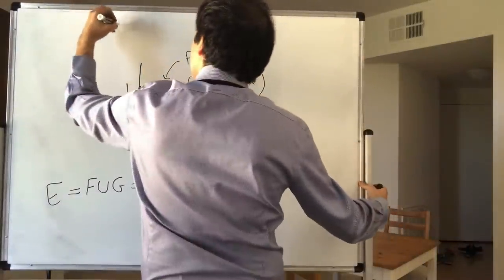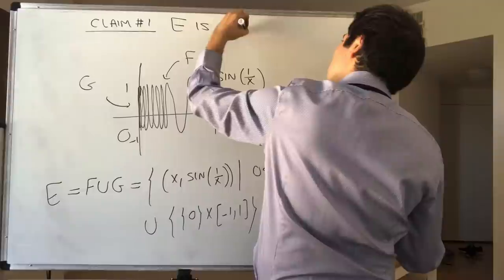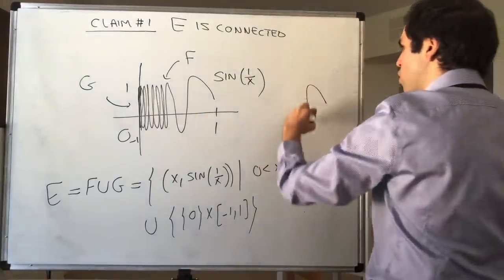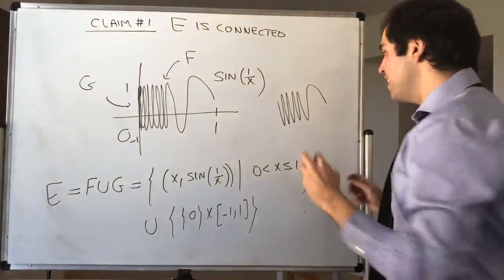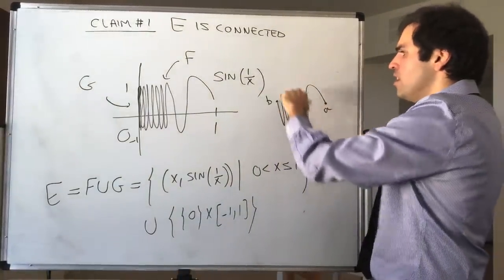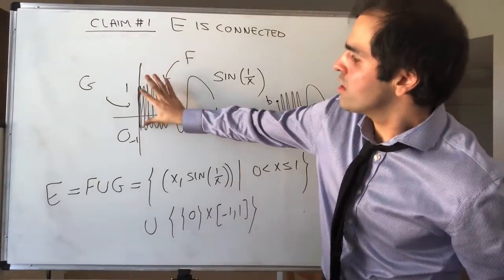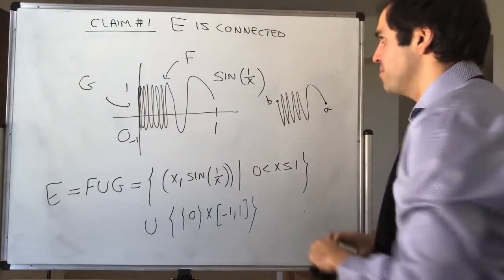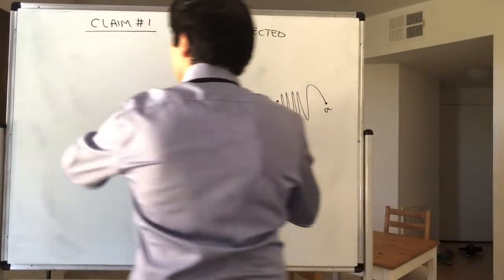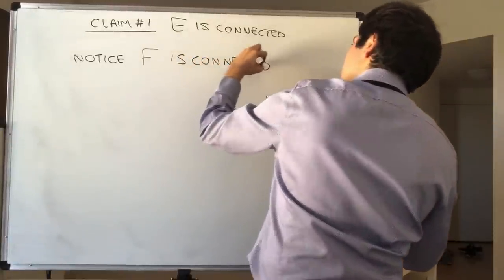Claim 1: let's show that E is connected. The first thing to understand is that f itself — just the curvy part — is connected, because between any two finite points on the curve it's path connected; there is a continuous way of going from A to B. So the main issue is the infinite oscillation near zero. f, the curvy part, is connected because it's path connected.